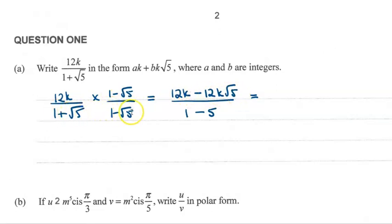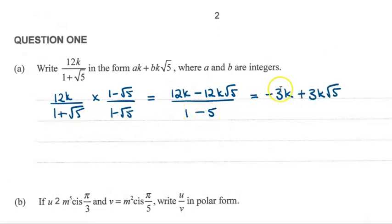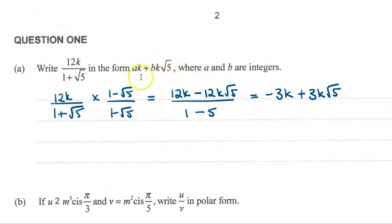So then that looks like this. If we do 12k multiplied across by 1 minus 5k, we get the top line. If we multiply out the bottom, the negative and positive square root of 5 will cancel each other out, and we end up with 1 minus 5. That simplifies to minus 4, so we do 12 divided by minus 4 in both terms, and we end up with minus 3k plus 3k root 5, which is in the form we were asked for.